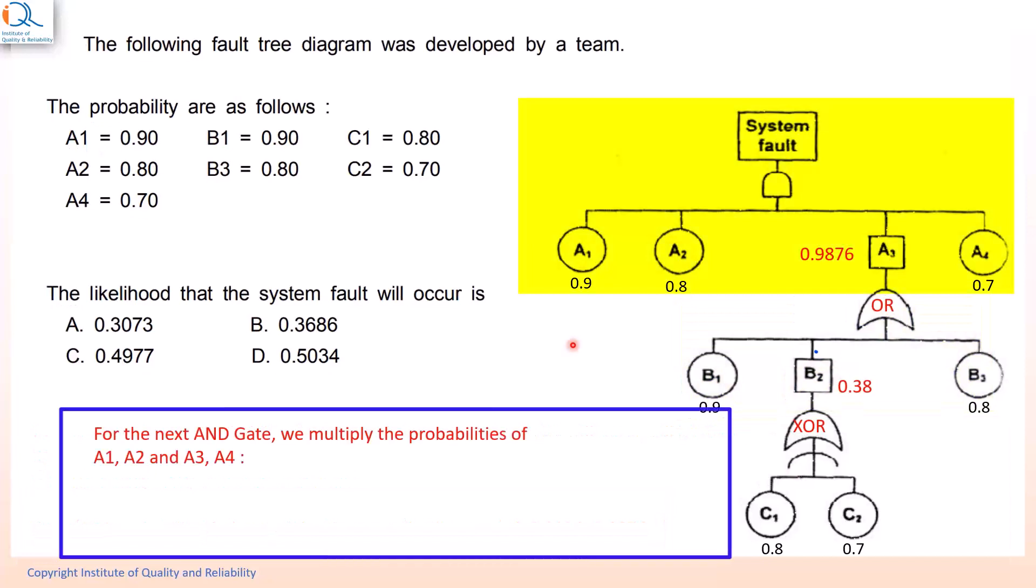For the next AND gate which is the topmost gate, we multiply the probabilities of A1, A2, A3 and A4 as these are independent events and we get the probability of the system fault as 0.4977. If you look at the four options, option C is the correct one which says 0.4977 and our answer matches with that.